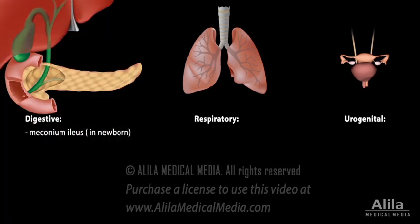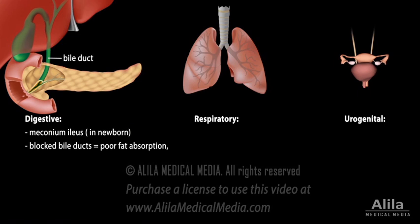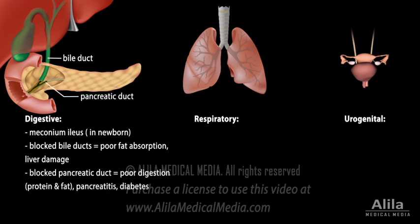In the digestive system, obstruction of bile ducts may lead to poor fat absorption and possible liver damage. Thick secretions may also block the pancreatic duct, preventing pancreatic enzymes from reaching the intestine. In addition to poor digestion, this leads to accumulation of digestive enzymes in the pancreas, which destroy pancreatic tissue causing inflammation or pancreatitis.